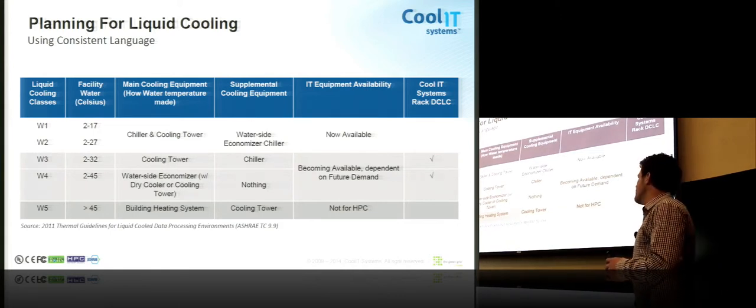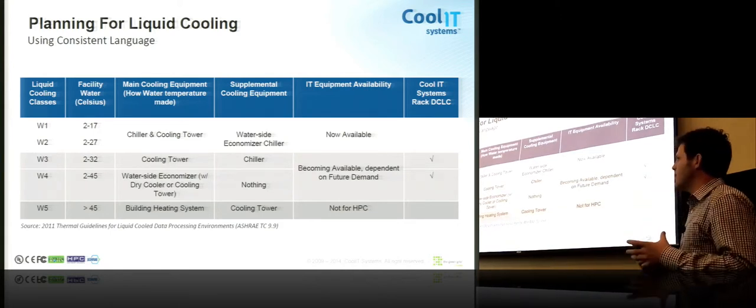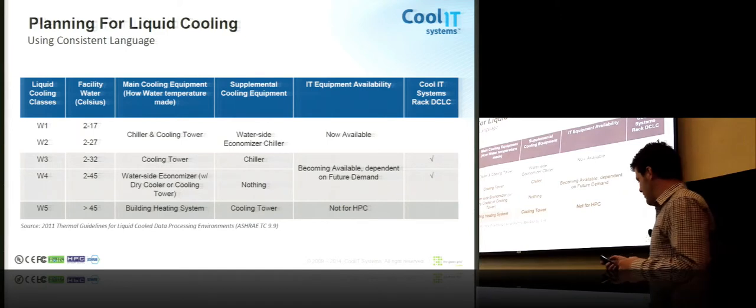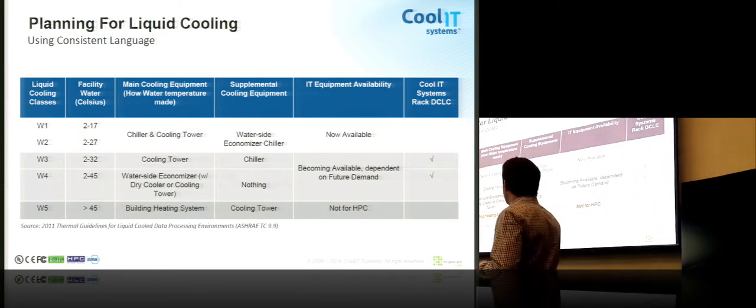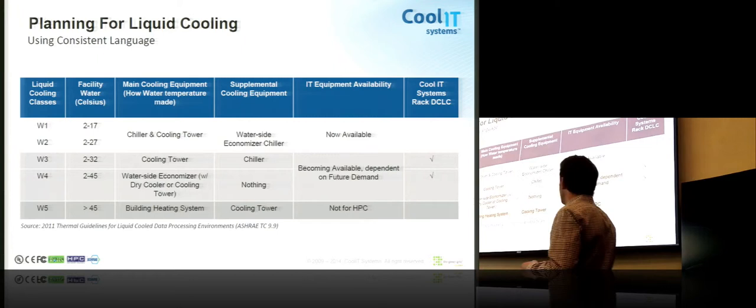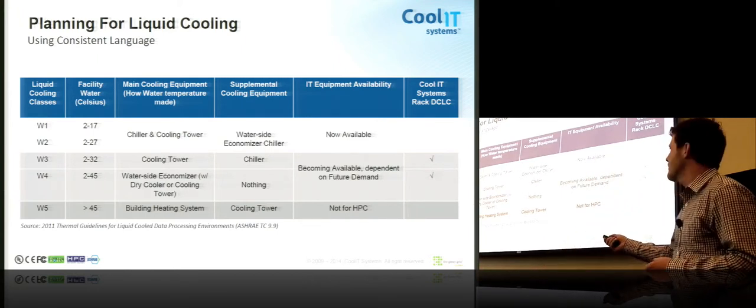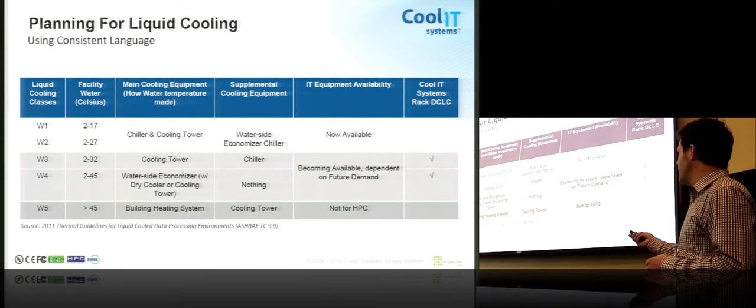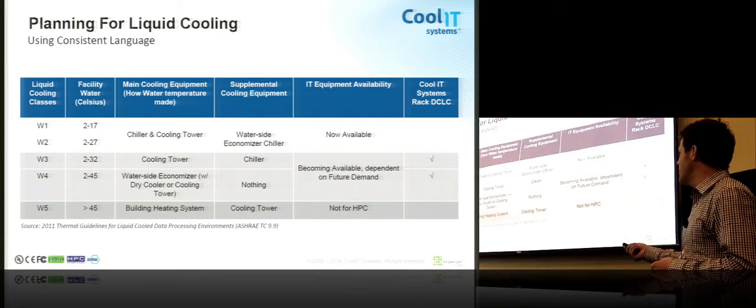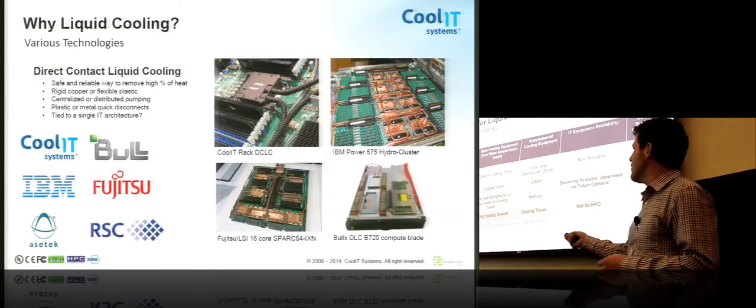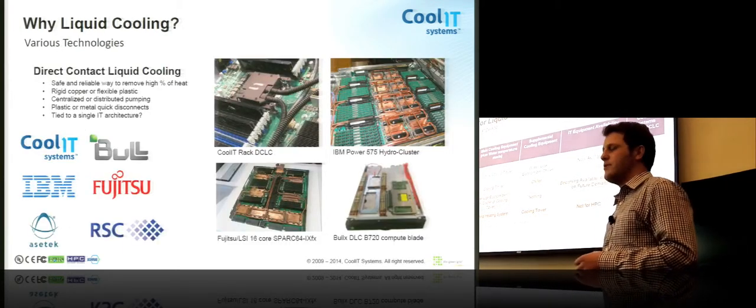So what this translates to for the data center folks is really we need to understand these numbers here and what it will take in your region to produce that. So as we go through the next slide that I may reference these numbers here, a lot of the warm water liquid cooling technologies are living in this W3, W4 range.